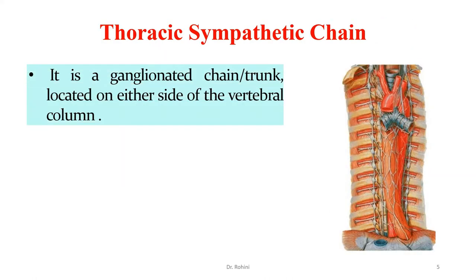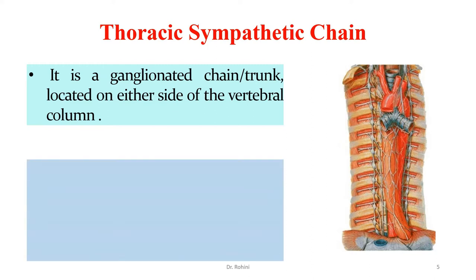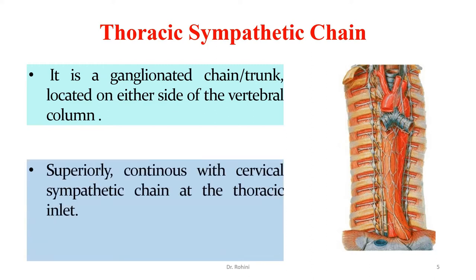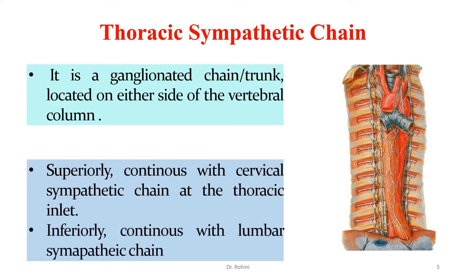The thoracic sympathetic chain is a ganglionated trunk located on either side of the vertebral column. Superiorly it continues with the cervical sympathetic chain at the thoracic inlet. Inferiorly it continues with the lumbar sympathetic chain, passing behind the medial arcuate ligament of the diaphragm.